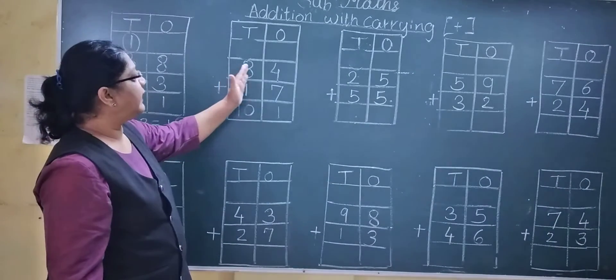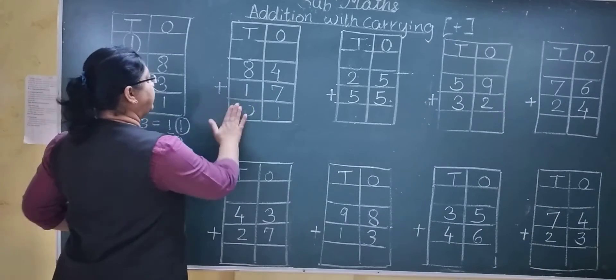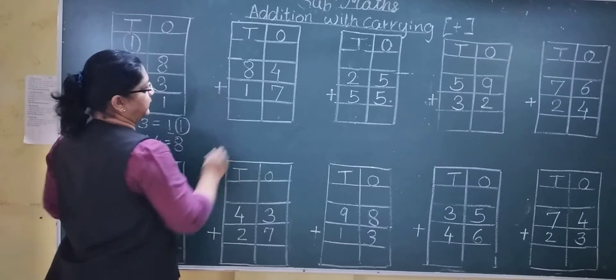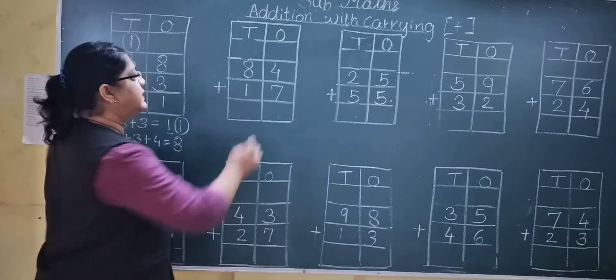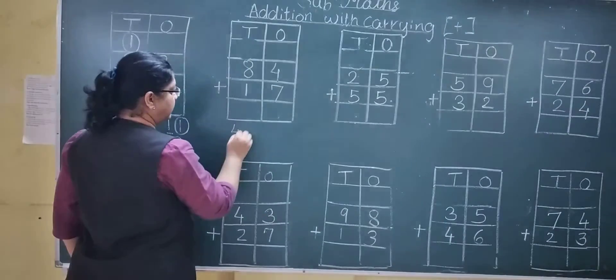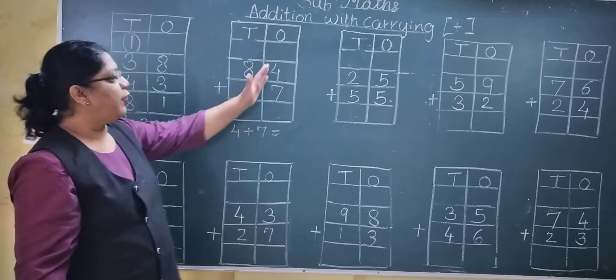One more example. See 84 plus 17. Start from ones. See 4 plus 7.